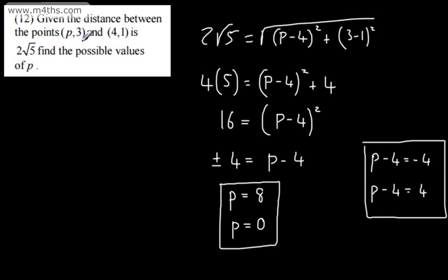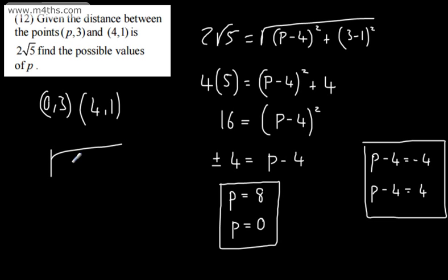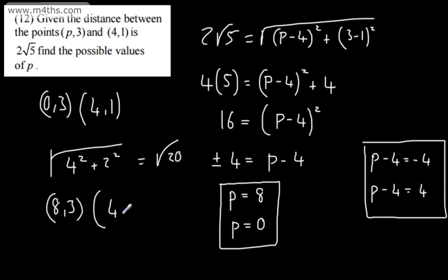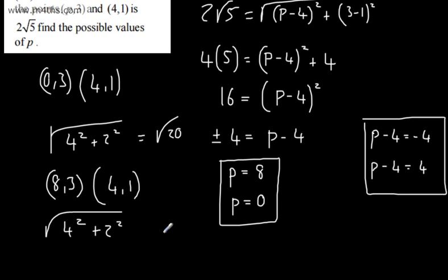Let's verify both values. For p equals 0: points are 0 comma 3 and 4 comma 1. Distance equals the square root of 4 squared plus negative 2 squared — that's 16 plus 4 — root 20, which is 2 root 5. For p equals 8: points are 8 comma 3 and 4 comma 1. That's 4 squared plus 2 squared — 16 plus 4 — root 20, which again is 2 root 5. Both values check out.